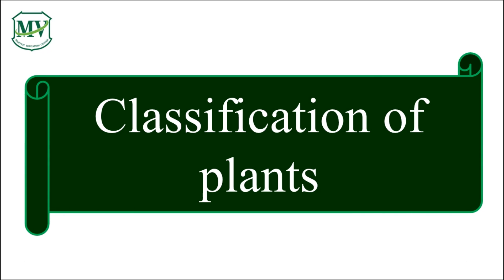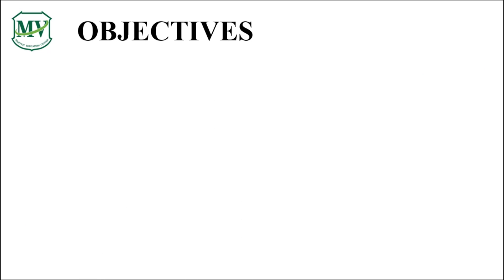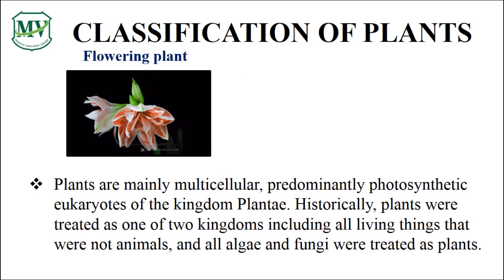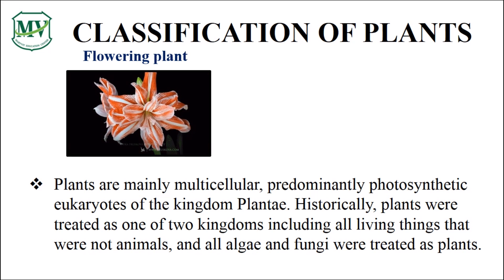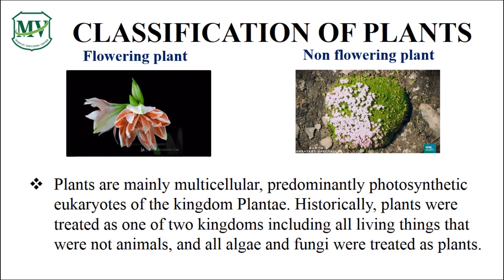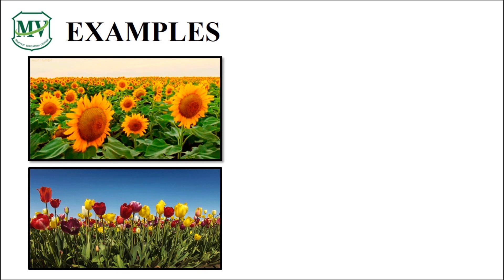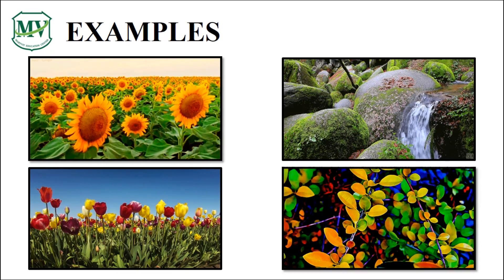Our lesson for today is all about classification of other living things. You will learn names of some plants and how to classify plants according to their characteristics. Plants are classified into two groups: they can either be flowering or non-flowering plants. The two pictures on the left are examples of flowering plants because they bear flowers, while the two other pictures on the right are non-flowering plants since they never bear flowers.